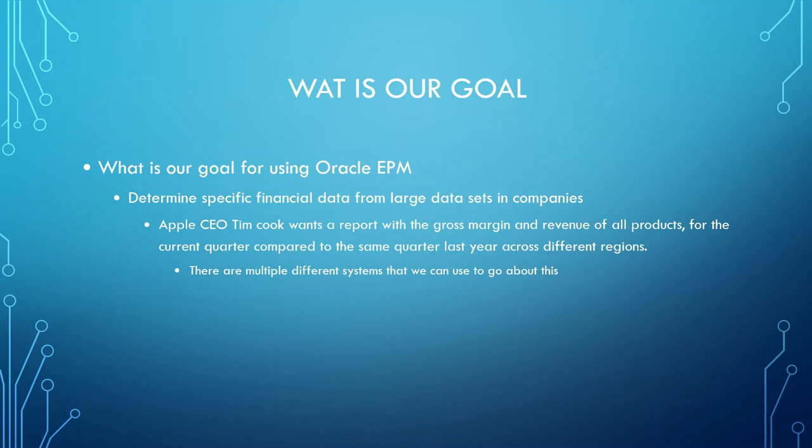Oracle EPM is used to determine specific financial data from large data sets and companies. For example, if we had the question that Apple CEO Tim Cook wants to report the gross margin and revenues of all products for the current quarter compared to the same quarter last year across different regions — then what would we do? How would we do this?